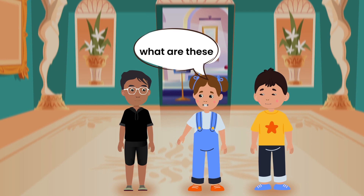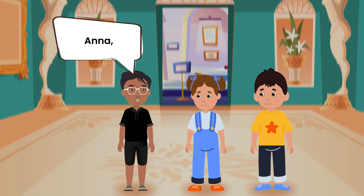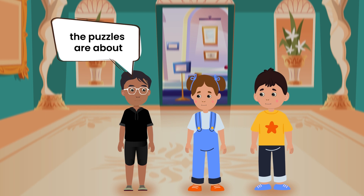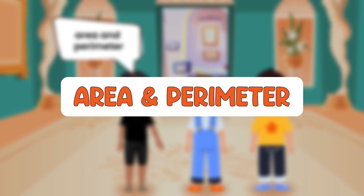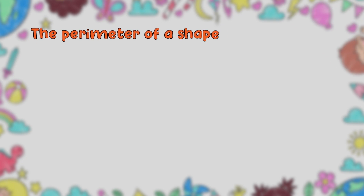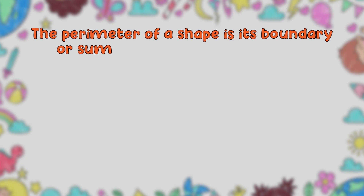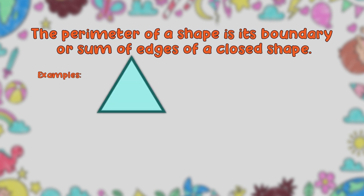Banu, what are these puzzles about? Anna, the puzzles are about area and perimeter. What are those, Banu? The perimeter of a shape is its boundary, or the sum of edges of a closed shape, as shown in the examples below.